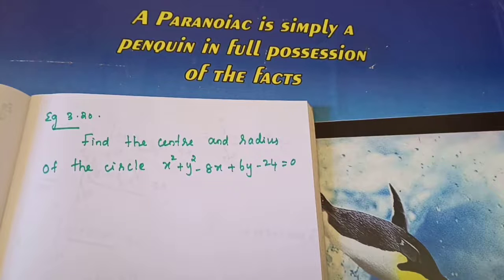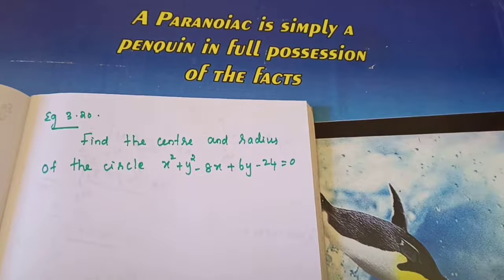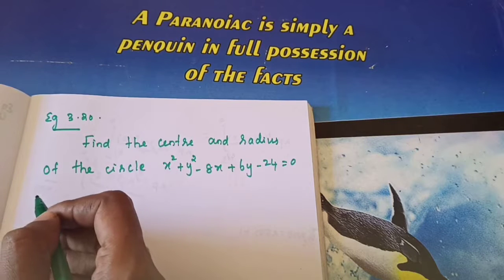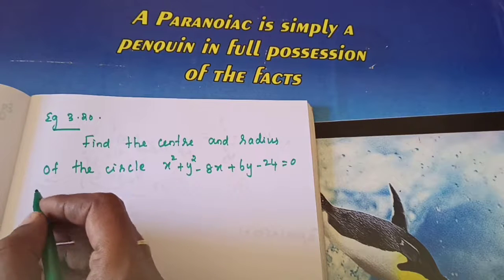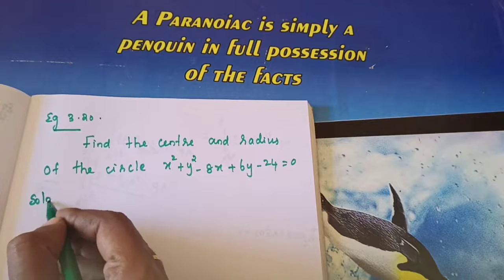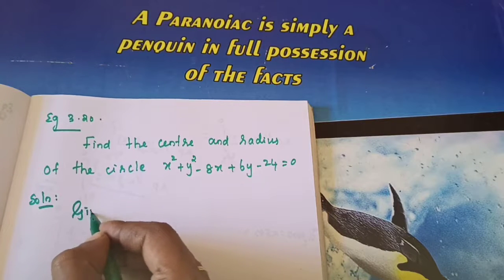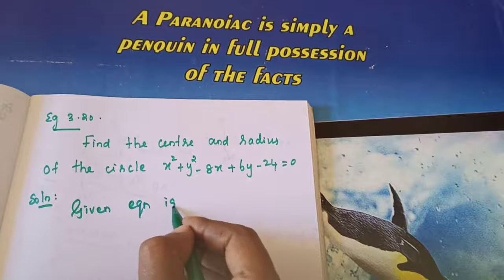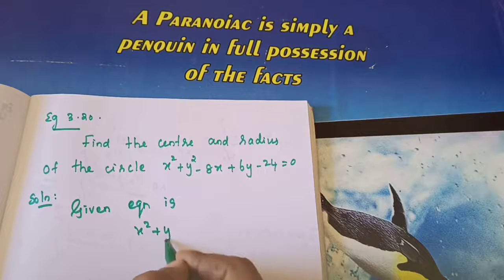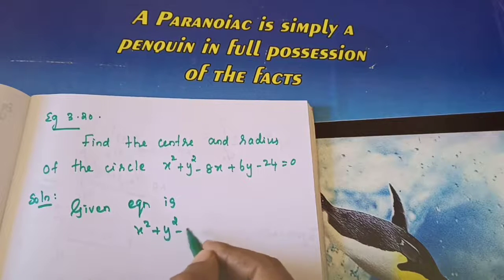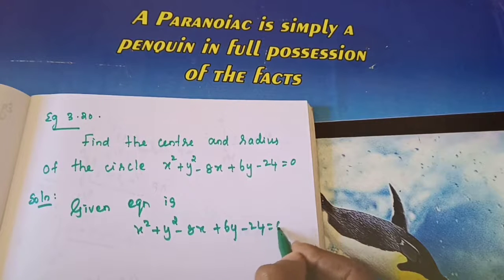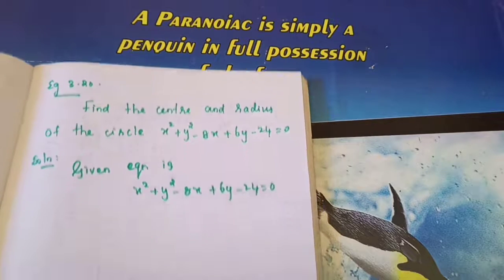Example 3.20: Find the center and radius of the circle x square plus y square minus 8x plus 6y minus 24 equals 0. Compare with the general equation of a circle. The given equation is x square plus y square minus 8x plus 6y minus 24 equals 0.